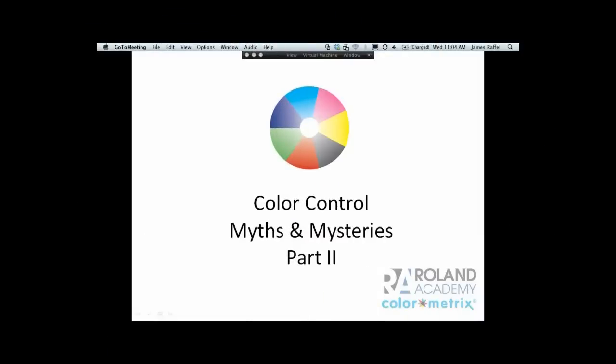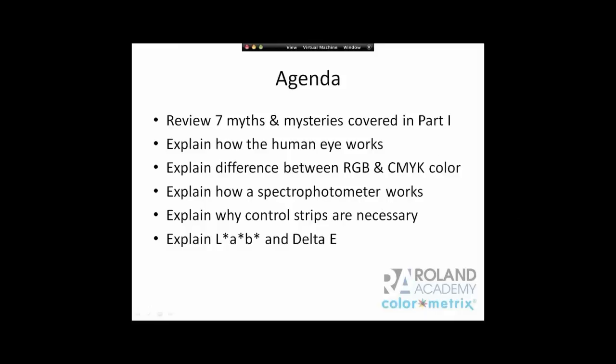This is Part 2 of the Color Control Myths and Mysteries webinar series. Our agenda for today is to first review the seven myths we covered in Part 1, explain how the human eye works on a biological level, explain the difference between RGB and CMYK color, explain how a spectrophotometer works, why control strips are necessary when you print, and explain LAB and Delta E — the measure of color difference. Delta E is simply a way a spectrophotometer measures two colors and attaches a numeric value of how close or not close they are.